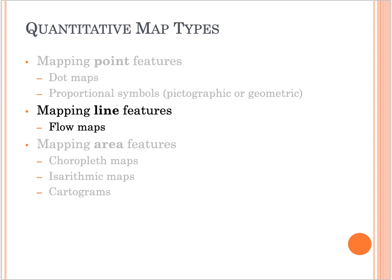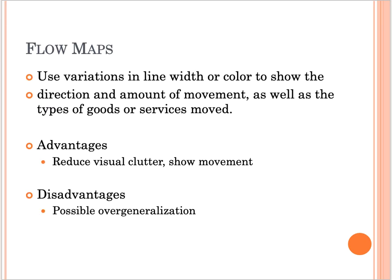For quantitative map types, we can also look at mapping line features. These types of maps are called flow maps. Flow maps use variations in line width or color to show the direction and amount of movement, as well as the types of goods or services moved. The advantages of flow maps are that they reduce visual clutter and show movement. The disadvantages include possible over-generalization.